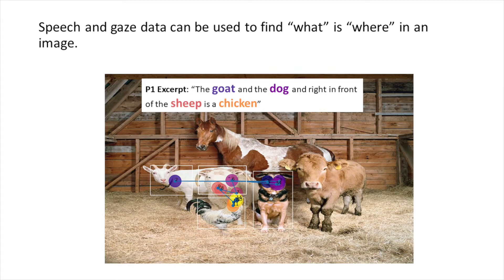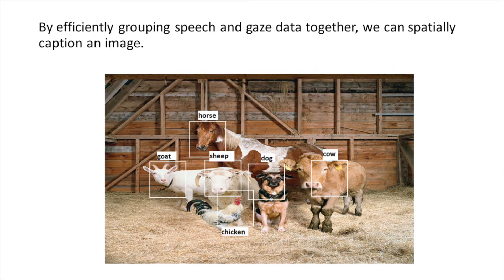Speech and gaze data can be used to find what is where in an image. By efficiently grouping this data, we can spatially caption an image.